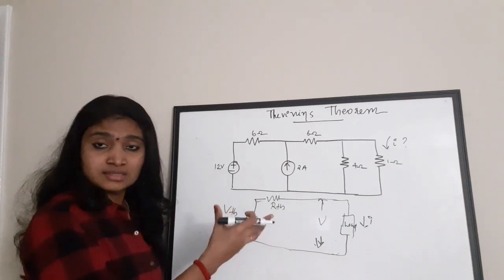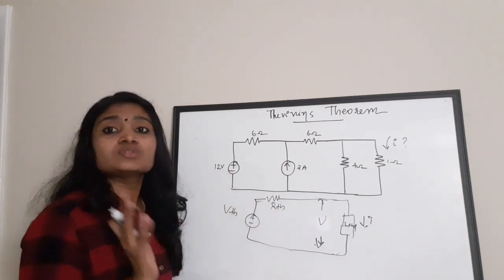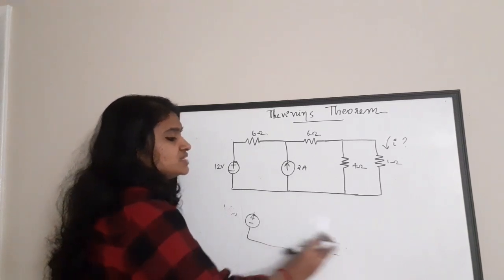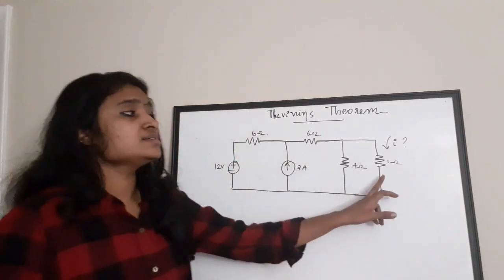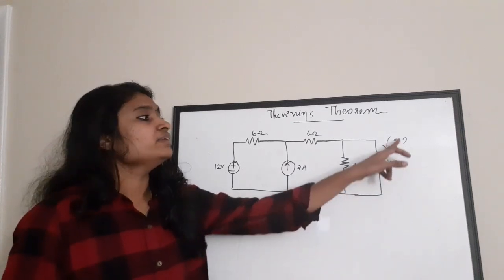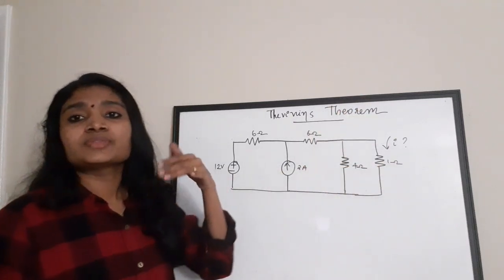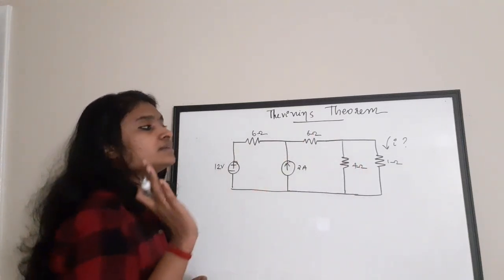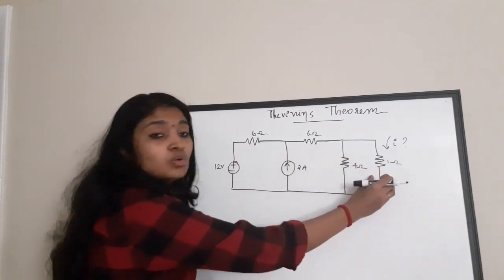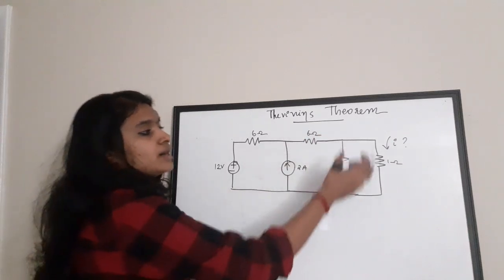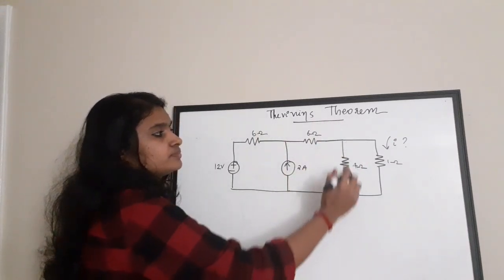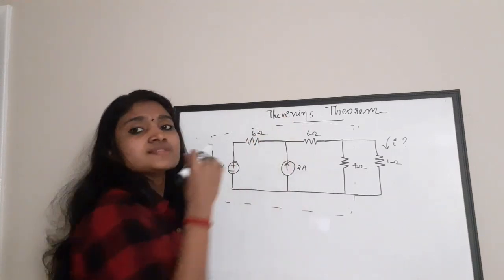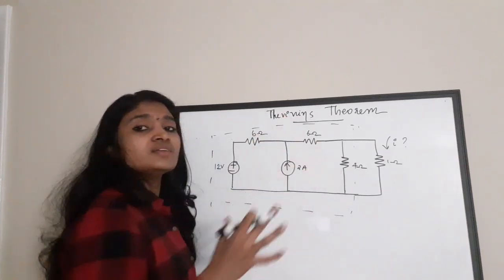We need to find the values of this voltage and resistance to replace the circuit. Now there's a question we're going to solve using Thevenin's theorem. In the question, we have a circuit with a 1-ohm resistor and we need to find the current i flowing through it. This is a two-terminal linear circuit connected to a load, and we can replace this portion with a voltage source and a series resistance.